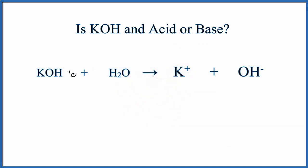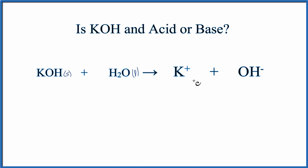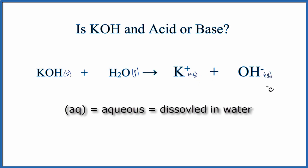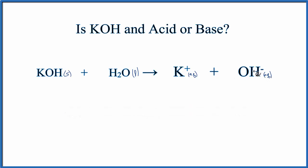We have KOH, which is a solid, like we saw at the beginning of the video, and water is a liquid. We drop some solid KOH into the liquid water and it dissolves. It dissociates completely — all the K-pluses and all the OH-minuses have separated. So we have K-plus and OH-minus, the hydroxide ion. These are dissolved in water, so we write AQ here to show that. It's this OH-minus that tells us KOH is a base.